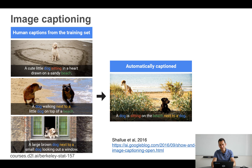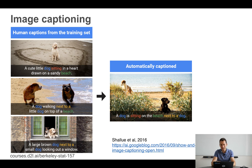You can also caption images automatically. Here are pictures of dogs doing dog things — for instance, a cute little dog sitting in a heart drawn on a sandy beach, which is a human-generated caption. A 2016 paper showed you can generate such captions automatically, producing something like "a dog sitting on the beach next to a dog" — something a human might also plausibly write.